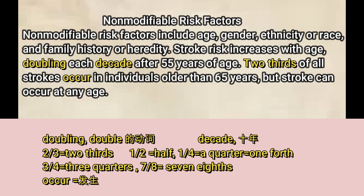Stroke risk increases with age, doubling each decade after 55 years of age。Doubling就是double这个动词的形式，decade就是十年的意思。翻译：中风的风险因年龄的增加而增加，超过了55岁之后每个十年就会翻一倍。所有的中风事件中的三分之二发生在65岁以上的人的身上，但是中风可以发生在任何的年龄阶段。这里的accure（occur）就是发生的意思，比happen更地道一些。